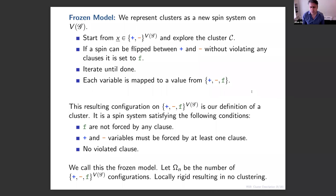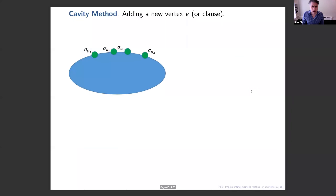Why do we want to study a more complicated model? Because we've removed the element of clustering from it — the clusters have been mapped to single points. The frozen model is replica symmetric for the entire range of parameters, so it's easier to deal with. The reason you don't see clustering in the frozen model is that on an infinite tree, to get to another valid frozen configuration you would have to change infinitely many variables. On the finite graph, you typically have to change a linear number of variables to go from one valid configuration to another.